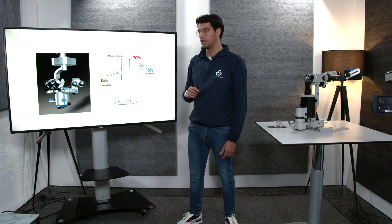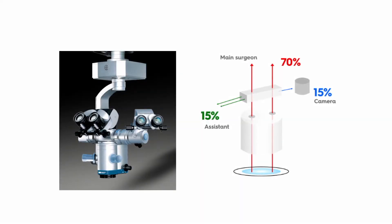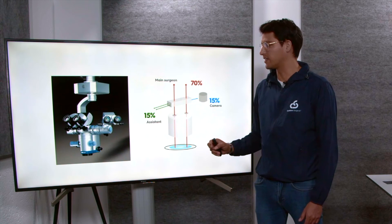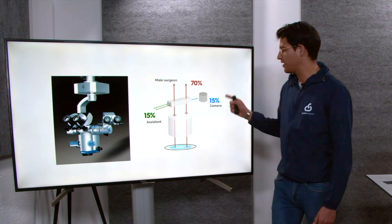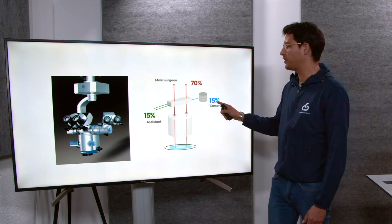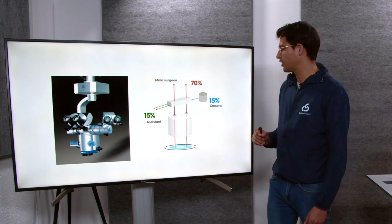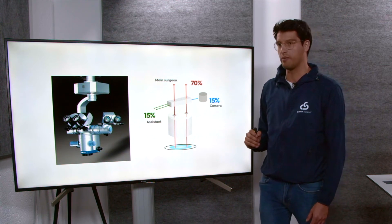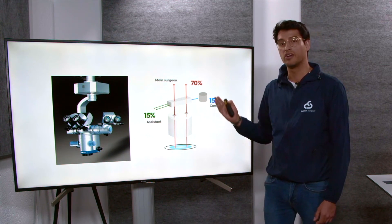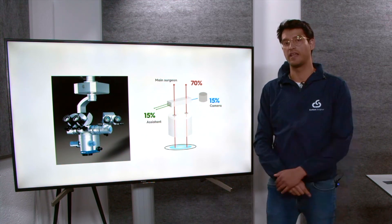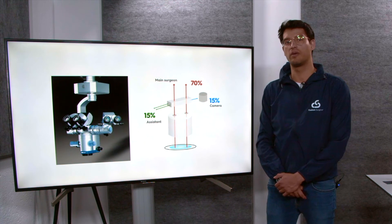On this third example, you will see that the beam splitter is used for two purposes. Initially, part of the light goes towards the assistant binoculars, and then another 50% of the light is going to the microscope camera. These are the applications that you can find when using beam splitters in medical grade microscopes.